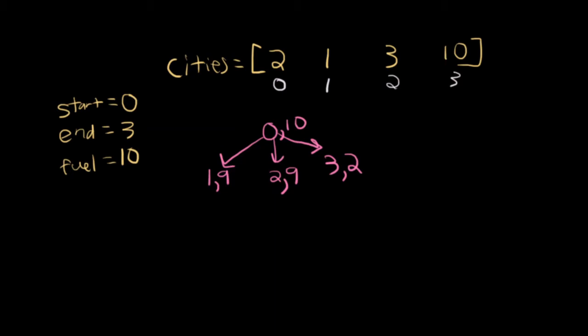Now from here, each of these problems can be broken up into its own problem. For example, what if I said the start was 1, the end was still 3, and the fuel was 9? That's the problem I'm solving when I go to city 1 first. So let's look at that. If I'm at city 1, I can go to city 0, and then I would have 8 units of fuel. I can go to city number 2. I burn 2 units of fuel, so I'd have 7 after that. Going from 1 to 3, I would have, that would burn 9 units of fuel. So I would be at 3 with 0 left.